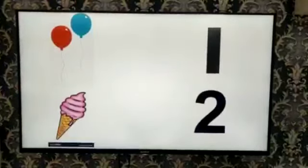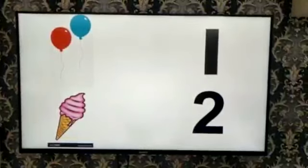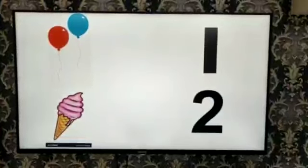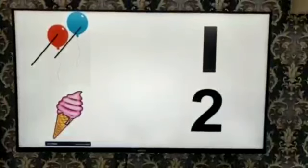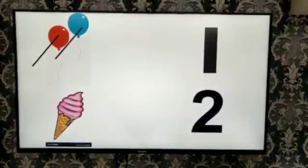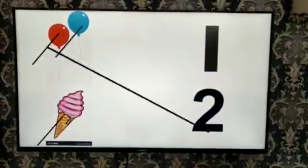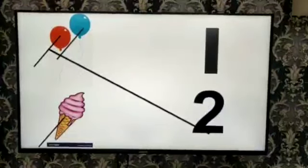Now cut and count the objects and match with the numbers. The first picture is balloons. We have to cut and count balloons. One and two. How many balloons are there? Two balloons. We have to match with the number two. And then cut the ice cream. One ice cream. Then we have to match with the number one.